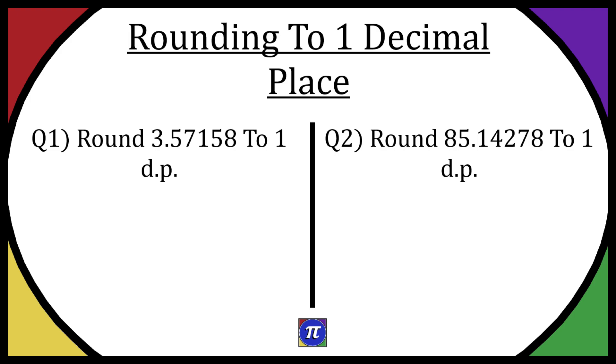For question one we need to round 3.57158 to one decimal place. Now there's two things you're going to want to look at when rounding to one decimal place.